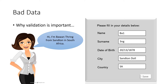Now if the system contains all of this data for BA1 Thring, it's not going to be too good, is it? So let's look at how we can avoid this.